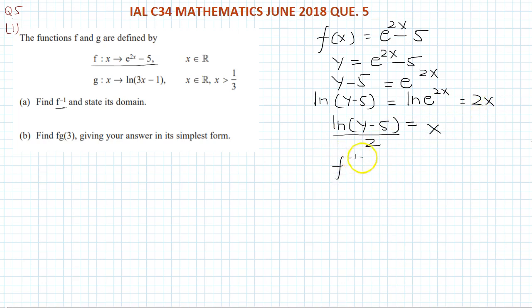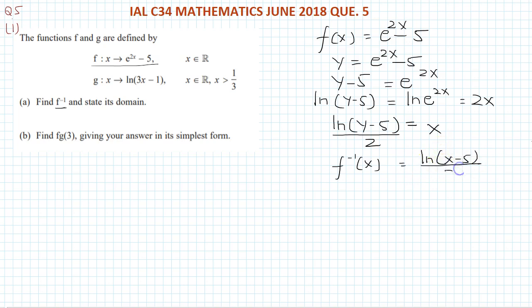So f⁻¹(x) = ln(x - 5)/2. We just change y to x: f⁻¹(x) = (ln(x - 5))/2. This is the inverse function. Now what will be the domain?